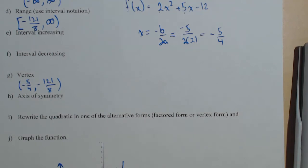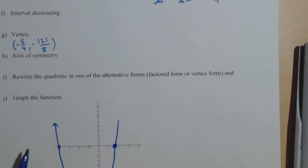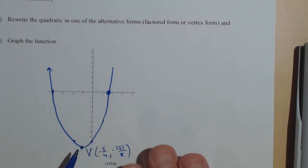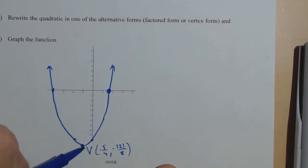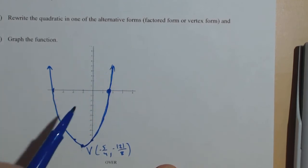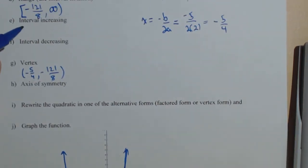We have all the information to answer all the rest of these questions actually pretty quickly. And I'll kind of go back and forth so you can see. But the next question is where is it increasing? Well we see clearly from the graph that it's increasing on this right-hand side. And we only use the x-coordinates. So it's going to increase from negative 5 fourths up to positive infinity. And we just use a parenthesis there.